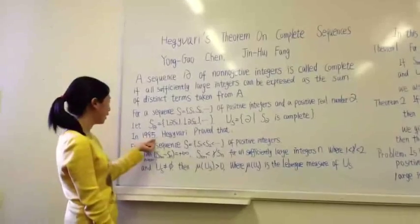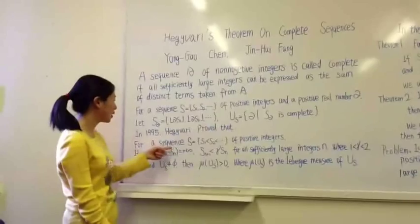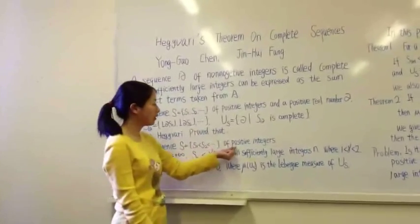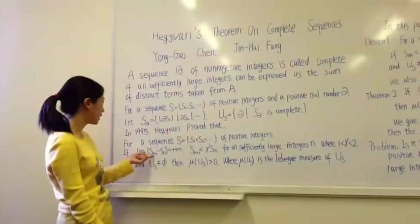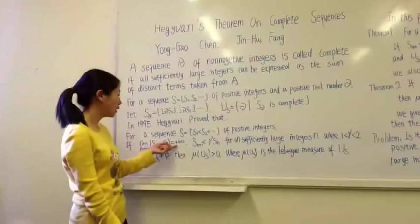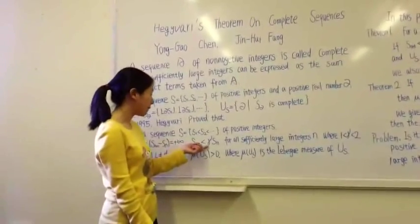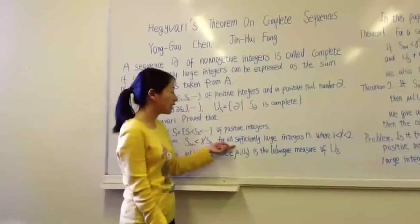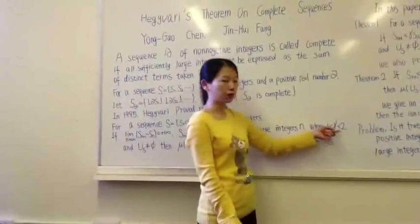In 1995, Hegewari proved that for a sequence S of positive integers, if the limit of S(n+1) minus Sn equals positive infinity, and S(n+1) is less than gamma times Sn for all sufficiently large integers n, where gamma is larger than 1 and less than 2,